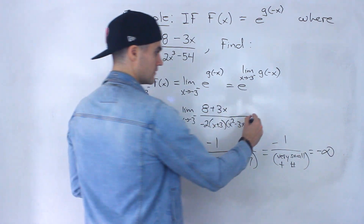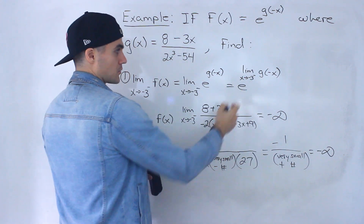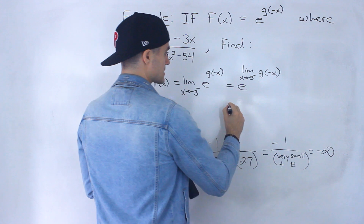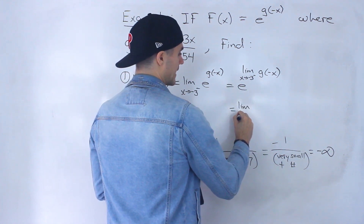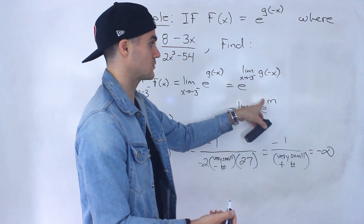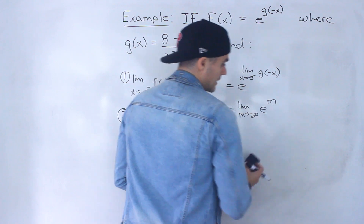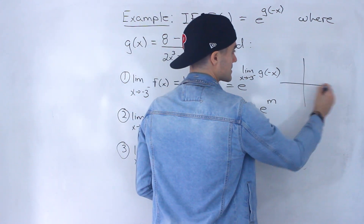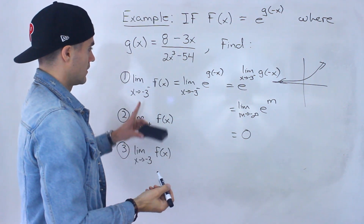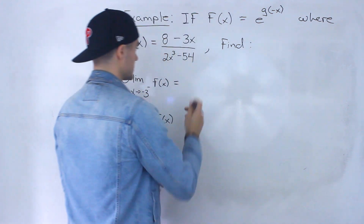So this inner limit is approaching negative infinity. Remember, this is just the exponent. We can rewrite the whole expression as the limit as m approaches negative infinity of e to the m. We know that e to the x approaches zero as x approaches negative infinity — the graph approaches zero. So the answer for this first limit is zero.